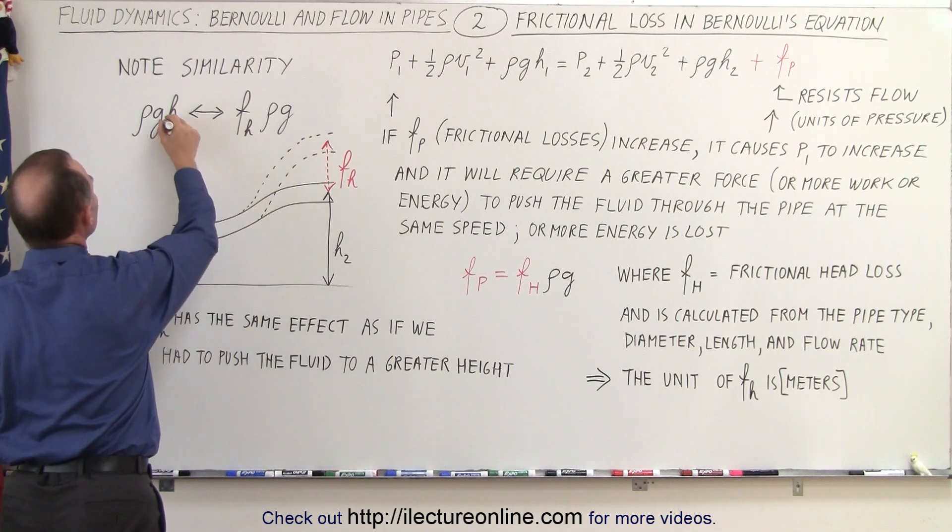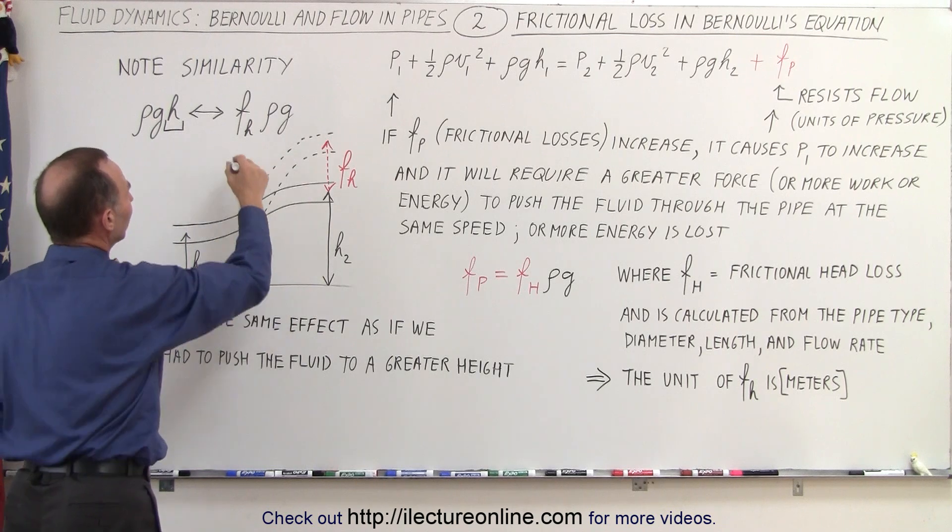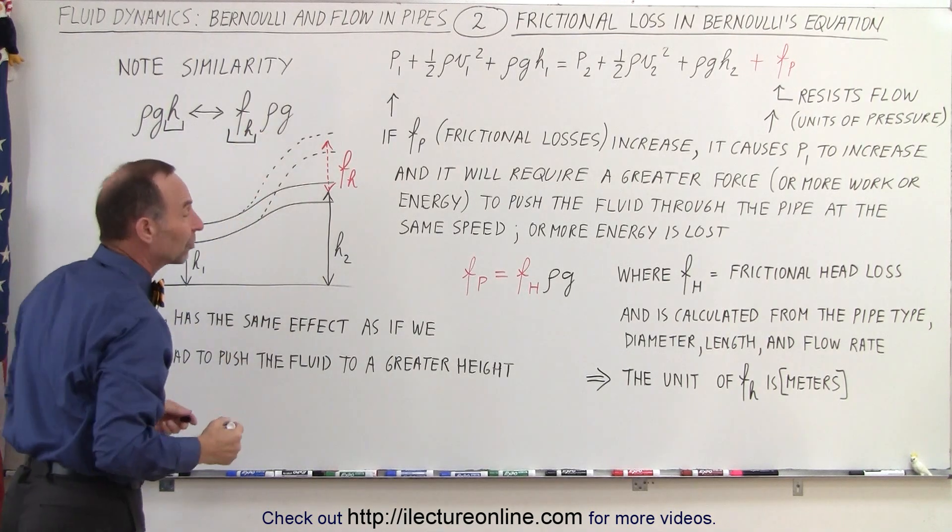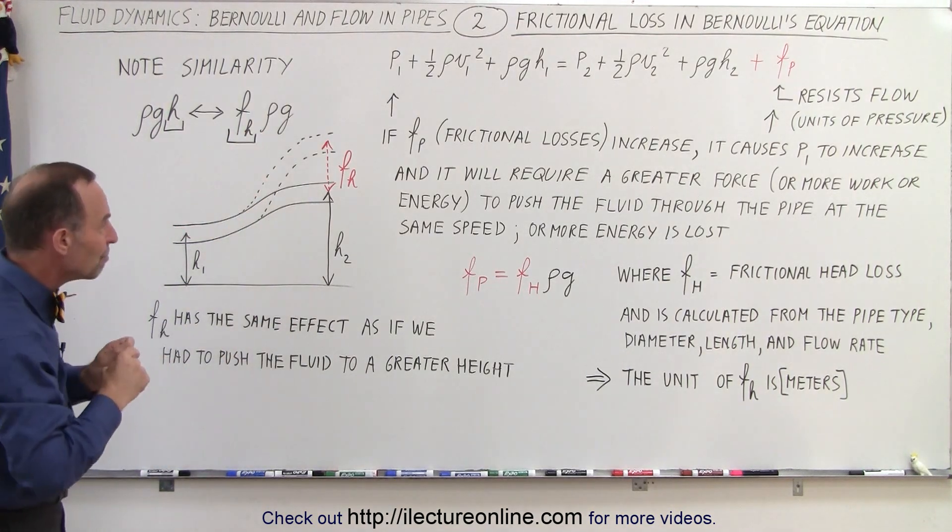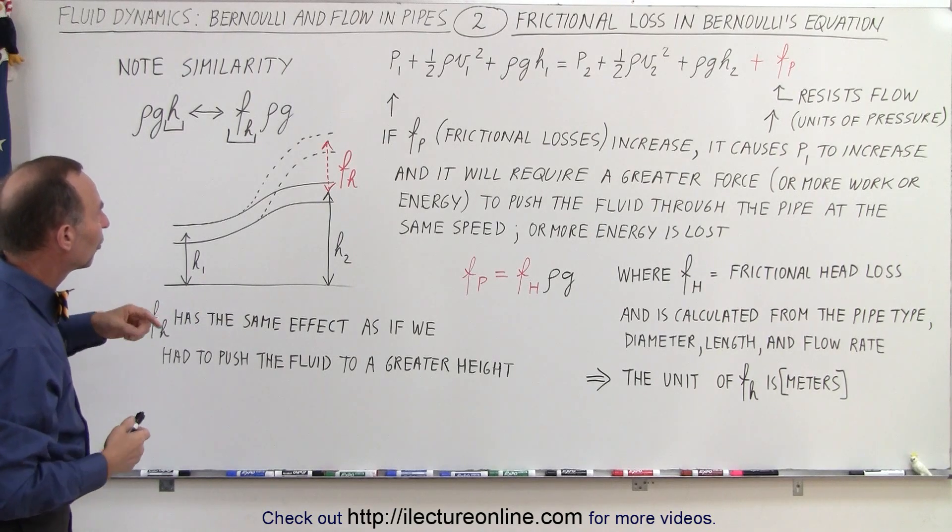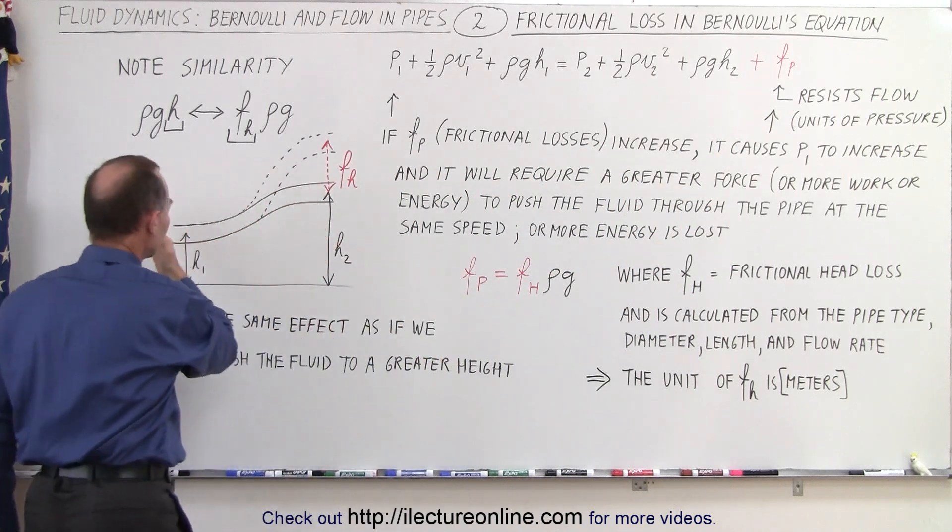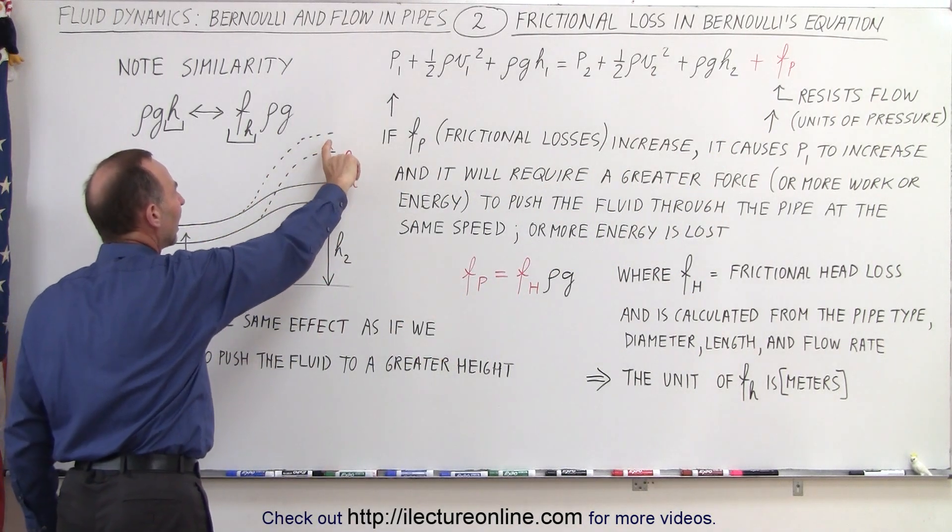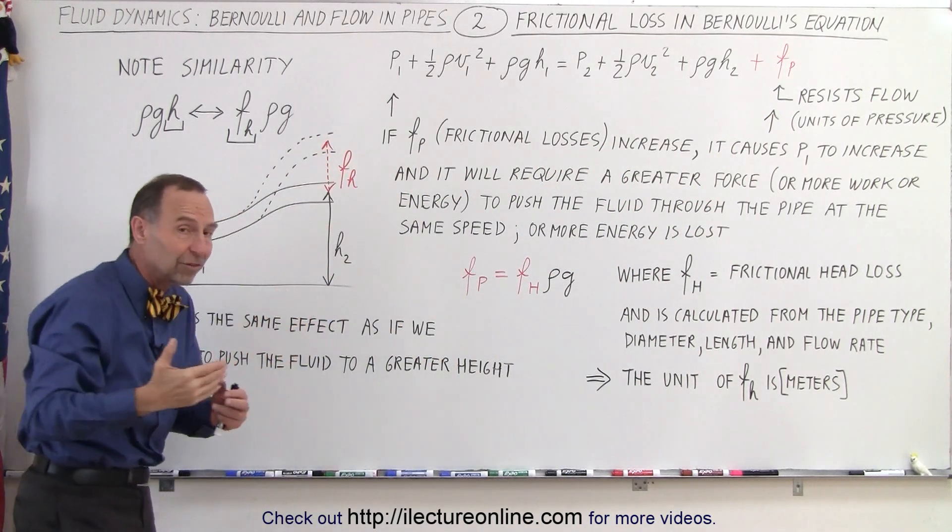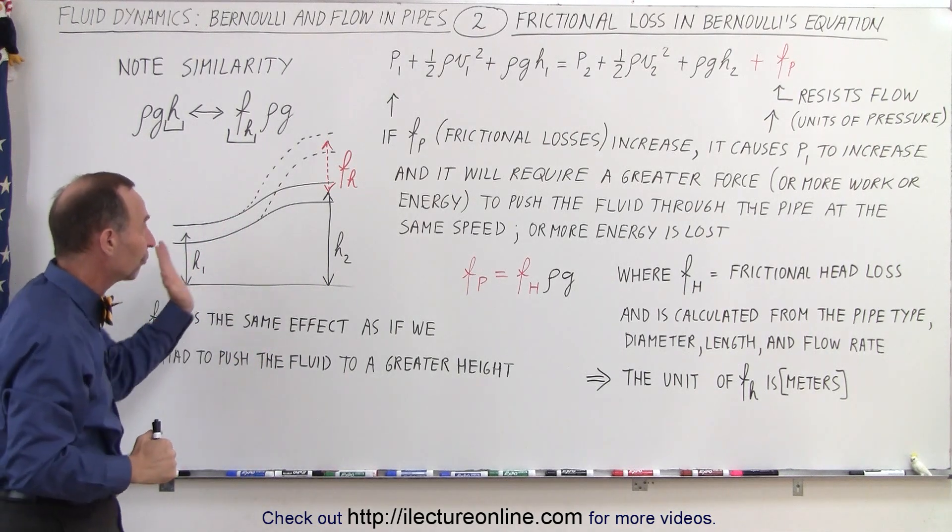That means the meaning of the height in the pipe is the same as the meaning of head loss, at least in the numerical sense. In other words, having this extra term F sub P is as if we have to push the fluid to a greater height, and F sub H represents the additional height we have to push the fluid to.